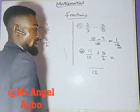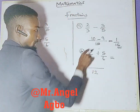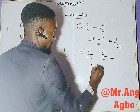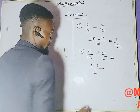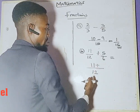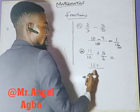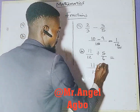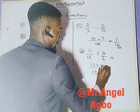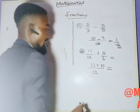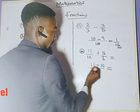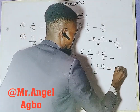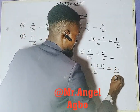12 divided by 12 is 1, and 1 times 11 is 11. 12 divided by 6 is 2, and 2 times 5 is 10. So let's add everything together: 11 plus 10 is 21, divided by 12.